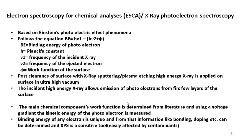The first surface characterization tool is ESCA or XPS — Electron Spectroscopy for Chemical Analysis, or X-ray Photoelectron Spectroscopy. This technique is based on Einstein's photoelectric effect, following the equation: B = hν₁ − hν₂ + φ, where B is the binding energy of a photoelectron, h is Planck's constant, ν₁ is the frequency of the incident X-ray, ν₂ is the frequency of the ejected electron, and φ is the work function of the surface.